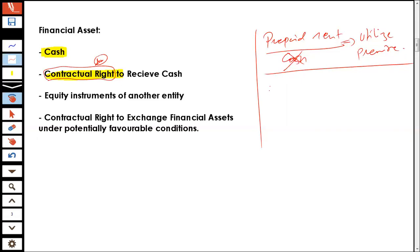Similarly, you have got prepaid insurance. When you have got a prepaid insurance, it is again a contractual right to avail the insurance facility. It's a contractual right to claim your loss in case you have got a loss in the future. But it's not a contractual right to receive cash.